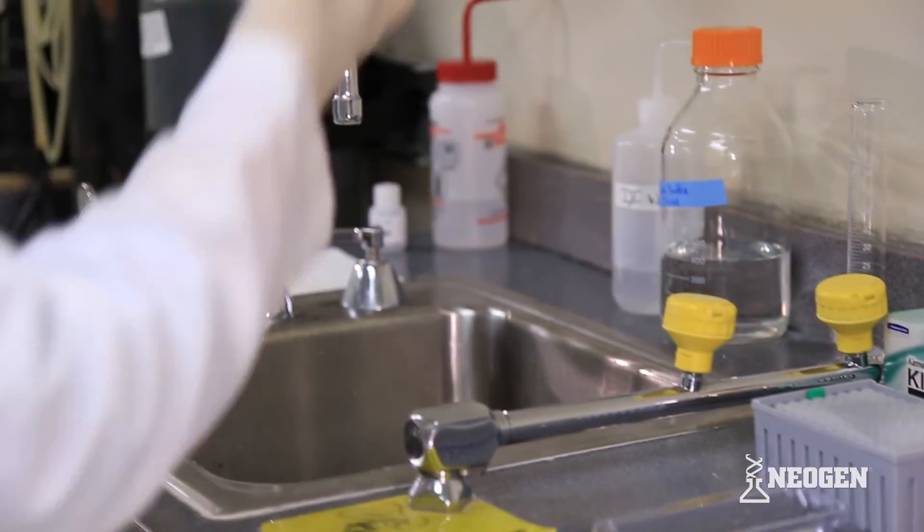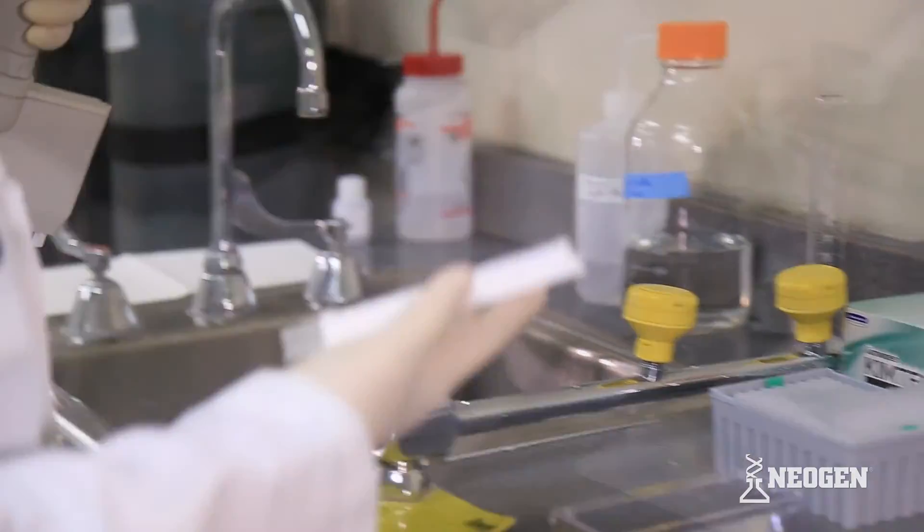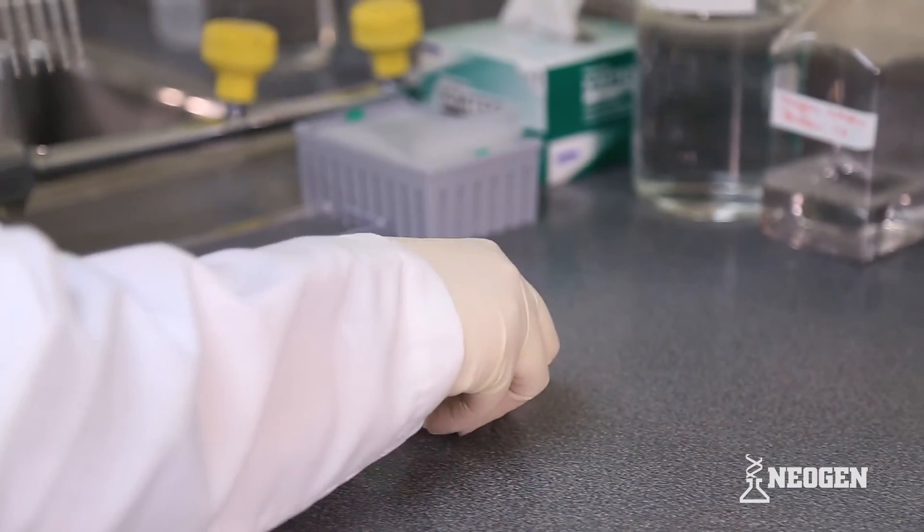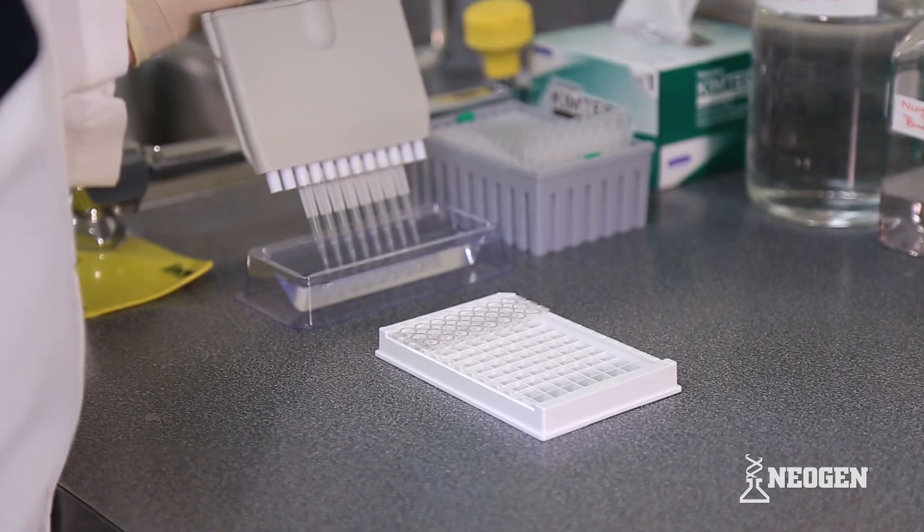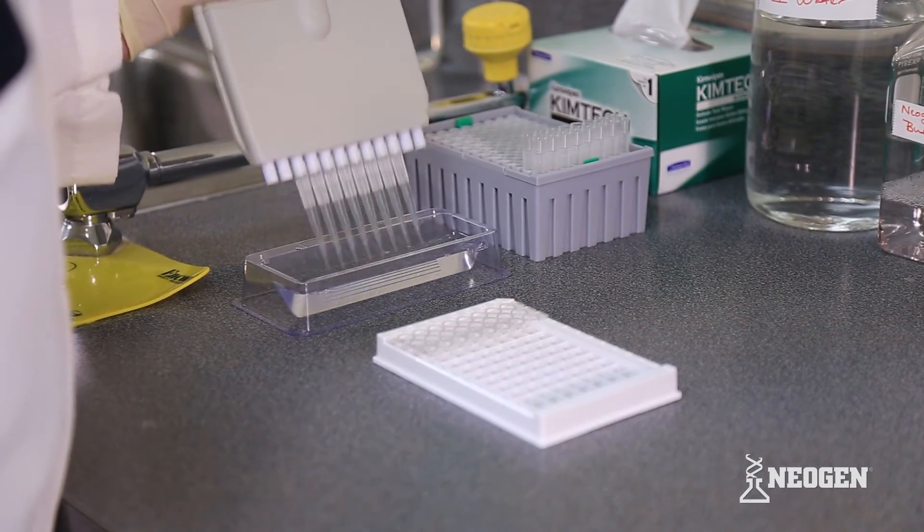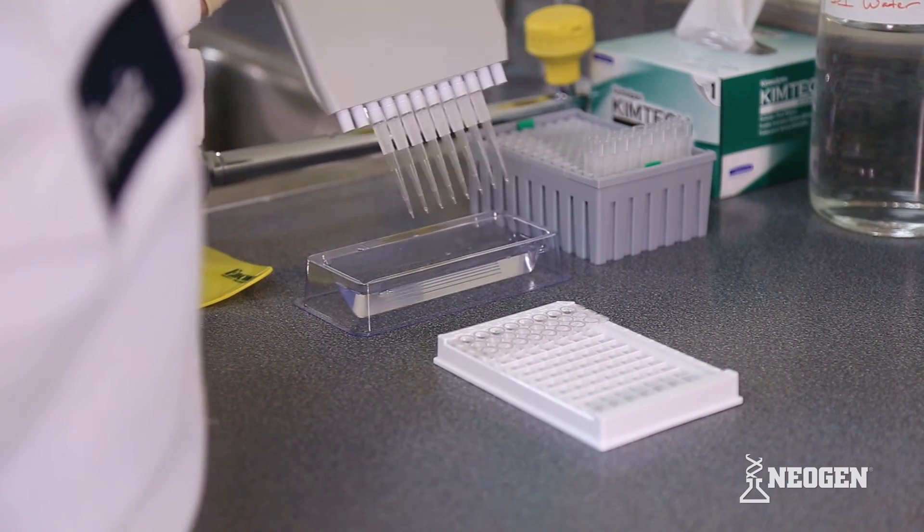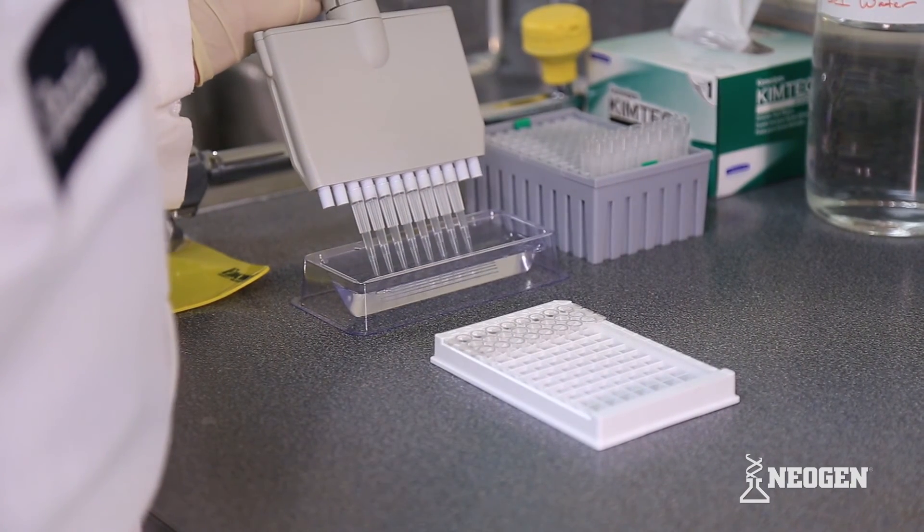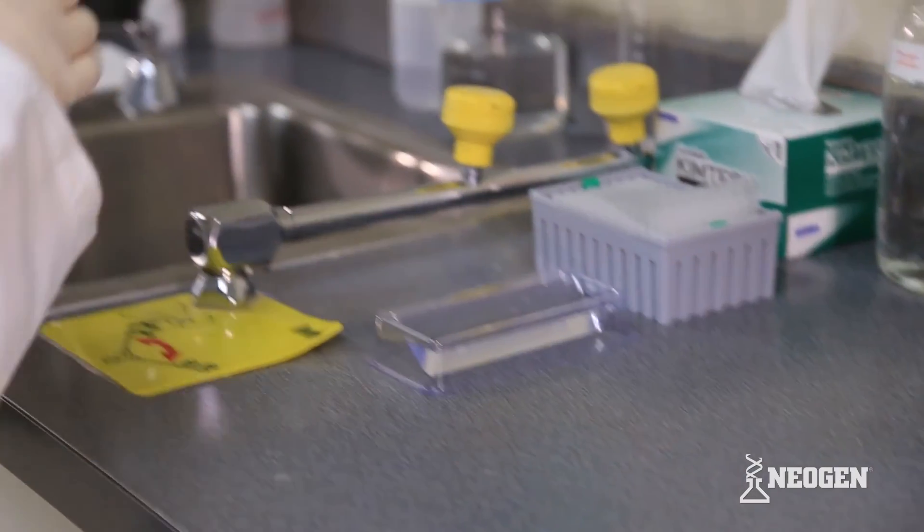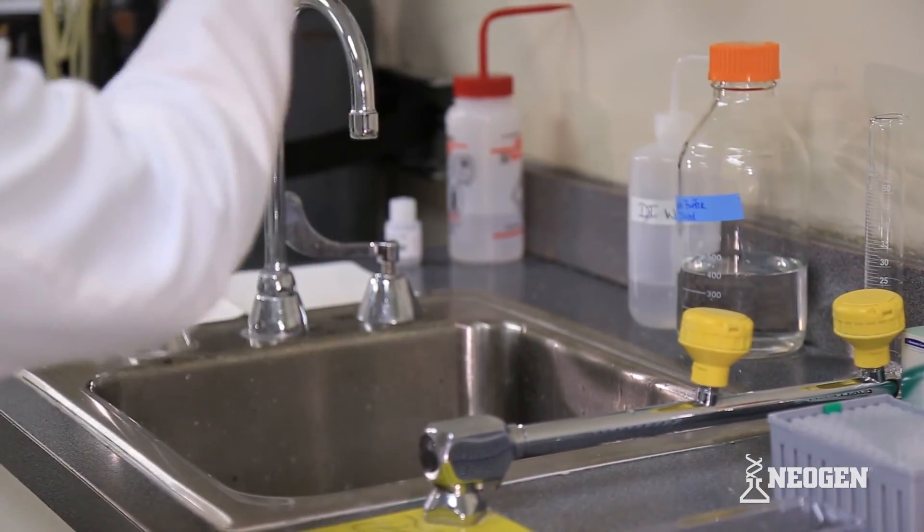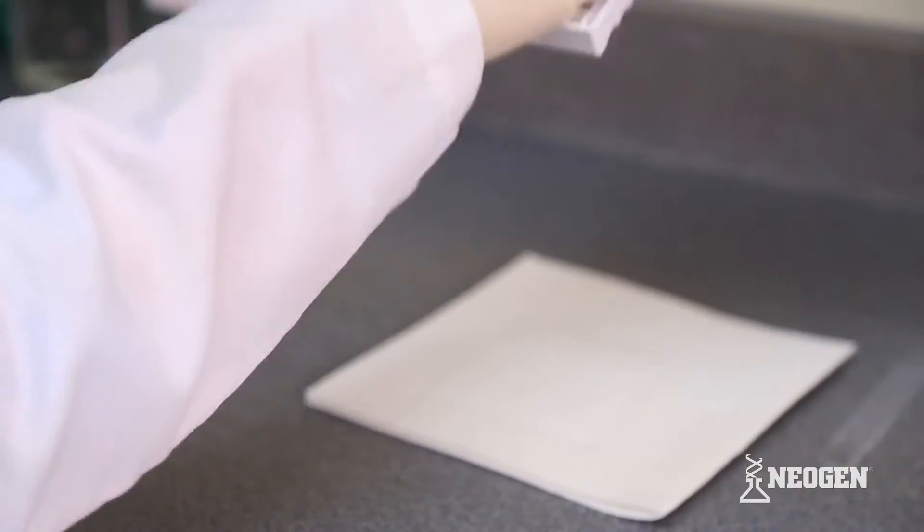Once 45 minutes has elapsed, dump the liquids from the wells. Tap the plate clean on a lint-free towel to remove any remaining liquid in the wells. Wash the plate by adding 300 microliters of the prepared wash buffer to each strip using an 8 or 12 multi-channel pipette. Once the wash buffer has been added to all of the strips, dump the liquid and tap the plate clean on a clean, lint-free towel. Repeat this step for a total of 3 washings.